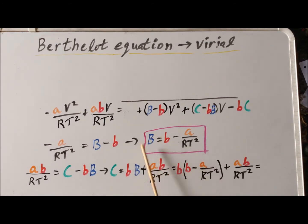Then we substitute our expression for capital B into our expression for capital C. And we notice that if we multiply through here, we get B squared minus AB over RT squared. Well, that minus AB over RT squared exactly cancels the positive AB over RT squared. So we're left with that the value of C is simply B squared.